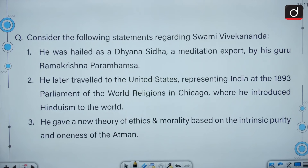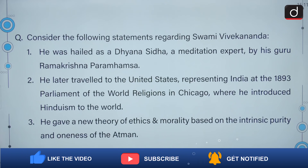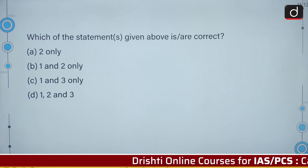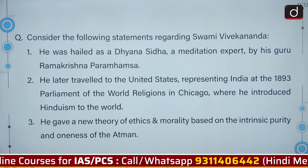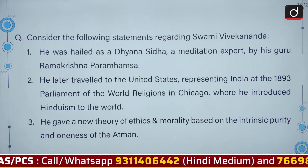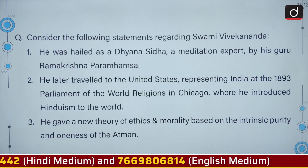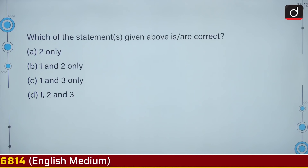Consider the following statements regarding Swami Vivekananda. Statement one: he was hailed as a Dhyansiddha, a meditation expert, by his Guru Ramakrishna Paramhansa. Statement two: he travelled to the United States representing India at the 1893 Parliament of the World Religions in Chicago, where he introduced Hinduism to the world. Statement three: he gave a new theory of ethics and morality based on the intrinsic purity and oneness of the Atman. All three statements are correct, so the correct answer is option D.